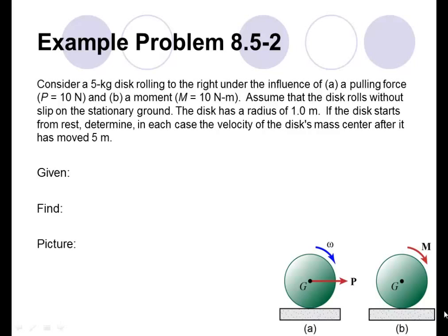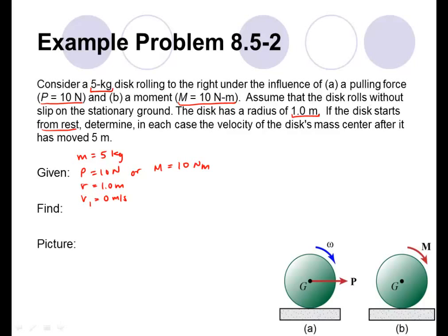In reading the problem, we try to identify what's given and what we're trying to find. We're given the mass of the disc. In the two different cases, either an applied force P equals 10 newtons, or an applied moment M equals 10 newton meters. We're told the radius of the disc, that it starts from rest, and that it rolls without slip. We want to determine the velocity after the disc has moved 5 meters.